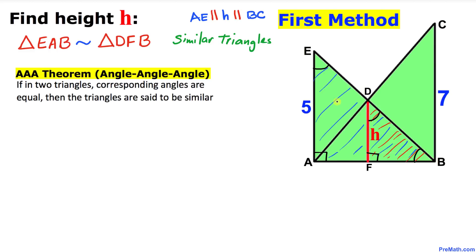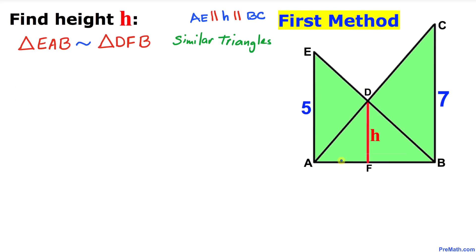Then we know that this third angle is going to be congruent as well, since the sum of the angles in any triangle is 180 degrees. Now let's call this side length AF as A, and FB as lowercase B.